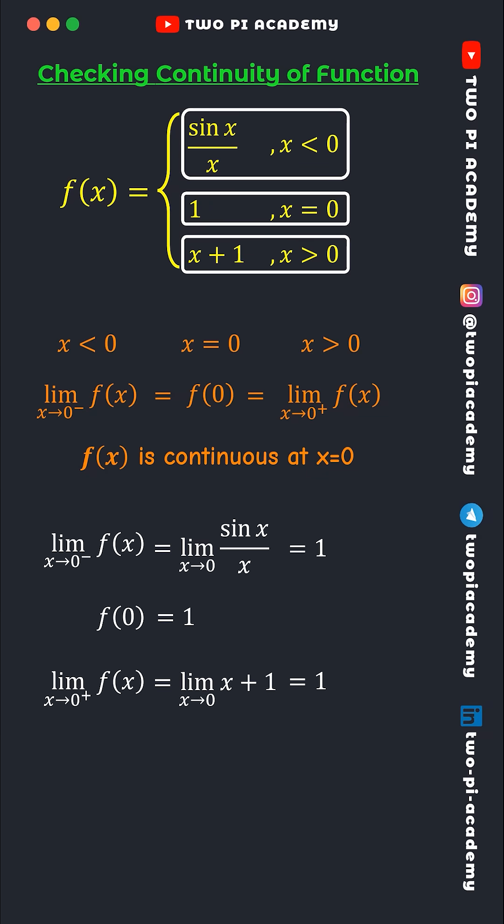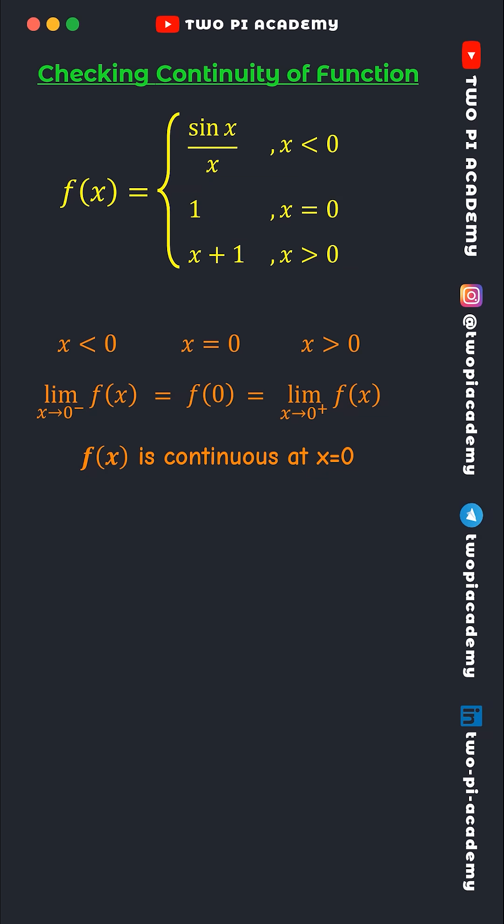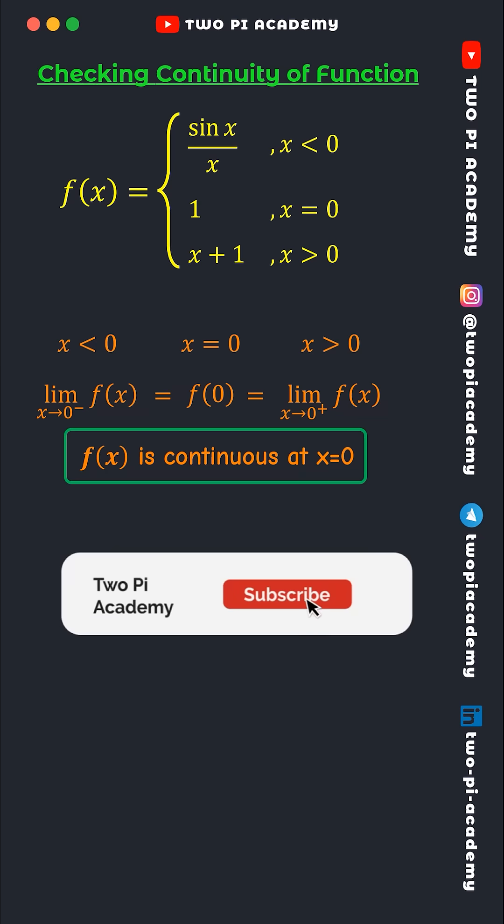Since all three of them are equal to each other, it means f(x) is continuous at x equals 0. If this video is helpful, please like the video and subscribe to the channel for more such videos. See you tomorrow.